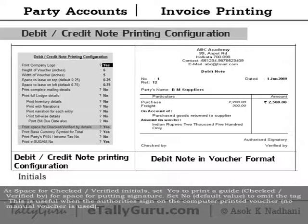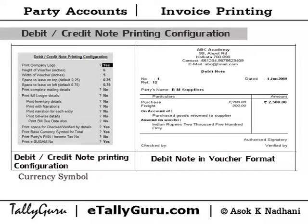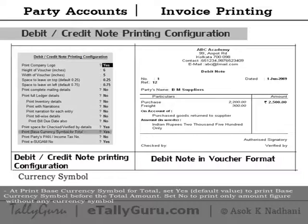For initials, at 'Space for checked/verified initial' set yes to print a guide for checked/verified by, providing space for putting a signature. Set no to omit the tag. This is useful when authorities sign on the computer-printed voucher and no manual voucher is used.